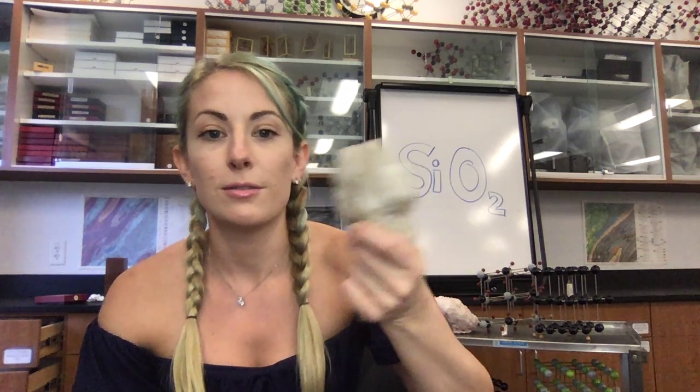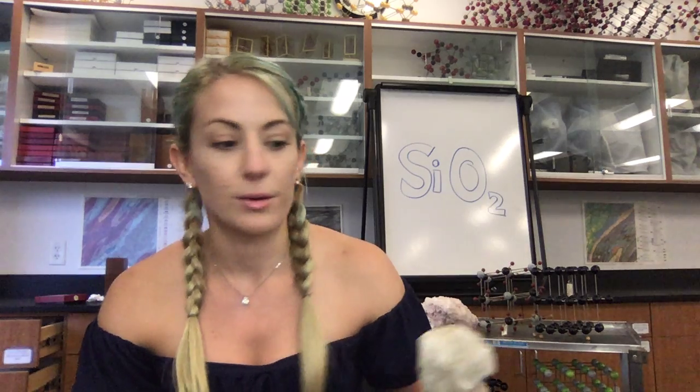If you look at something like granite in your kitchen countertops, granite is made up of quartz crystals, so you'll find silicates all around you.